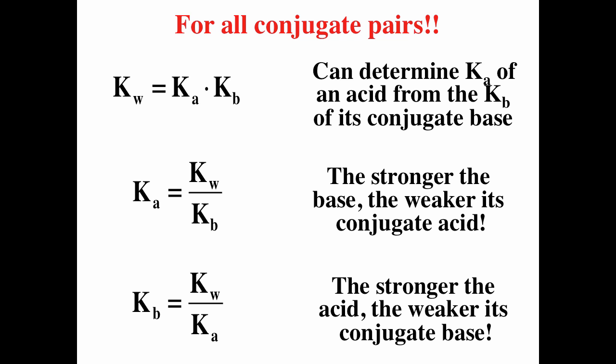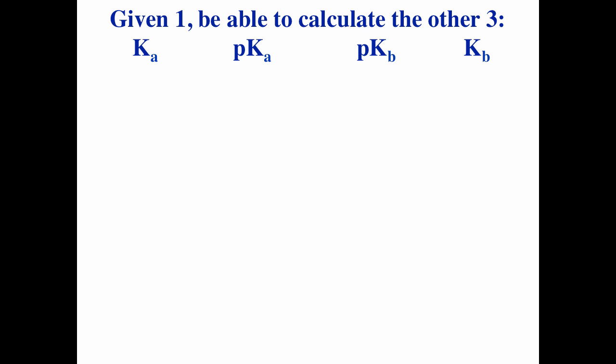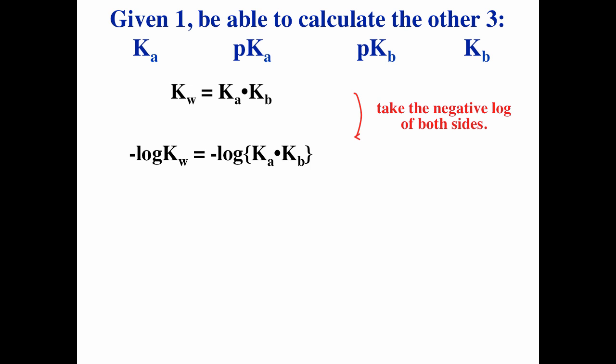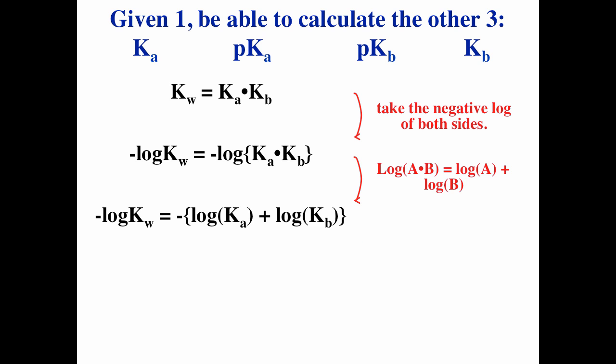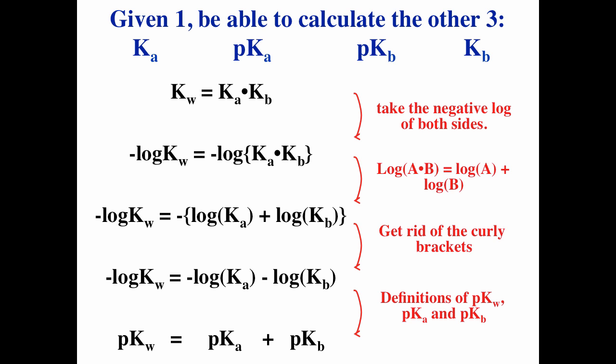Ka times Kb equals Kw. Ka equals Kw over Kb, so if Kb is very large, Ka is very small. Kb equals Kw over Ka, so if Ka is very large, Kb will be very small — the stronger the acid, the weaker its conjugate base. Ka, Pka, PkB, and Kb are all related. Since Kw equals Ka times Kb, taking the minus log of both sides gives PkW equals Pka plus PkB. At 25°C, PkW is 14, so Pka plus PkB equals 14.